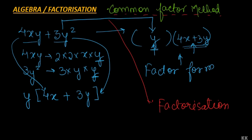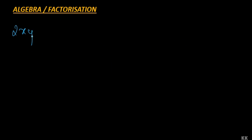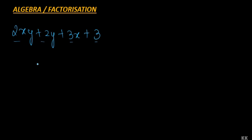Now there can be a scenario in which we have an algebraic expression say 2xy plus 2y plus 3x plus 3, and we are asked to factorize it. The first thing we need to check is whether there is anything common among all the terms. But when we look at the four terms, we see that there is nothing common to all the terms. So how do we factorize it? The second method is called factorization by regrouping.